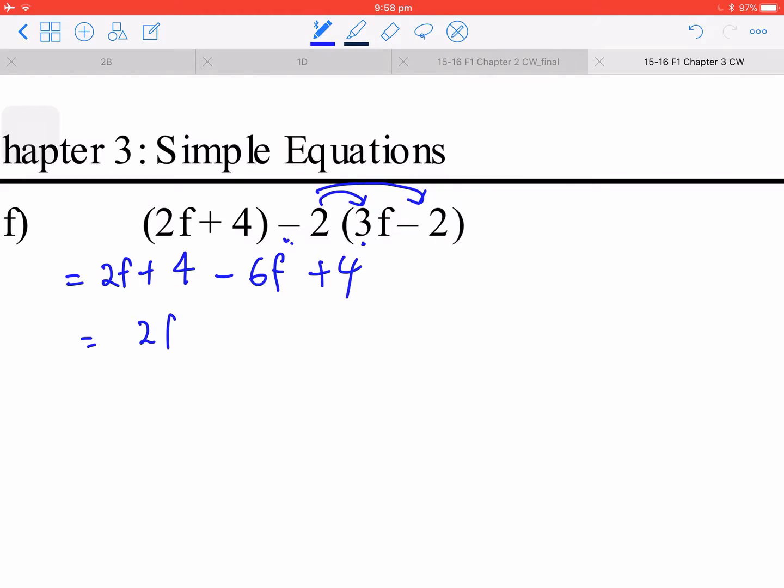This time you arrange the order again—the like terms put together, constant terms put at the end. So you have negative 4f plus 8.